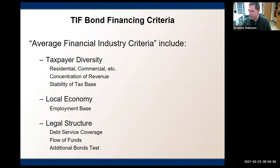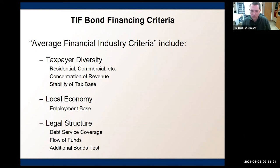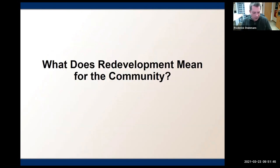Here are some basic criteria when it comes to tax increment financing bond criteria, given to me by a colleague who specializes in bond underwriting specifically as it relates to redevelopment. Typically we're looking for areas where there's good taxpayer diversity, a relatively strong employment base, and you always need to think about the legal structure of how you're going to set up your TIF and TIF bonding approaches. Redevelopment is a very complicated tool as opposed to all the other financing tools in the state of Nevada financing toolbox. The real purpose of redevelopment is how can we benefit not just the redevelopment area, but our entire community.